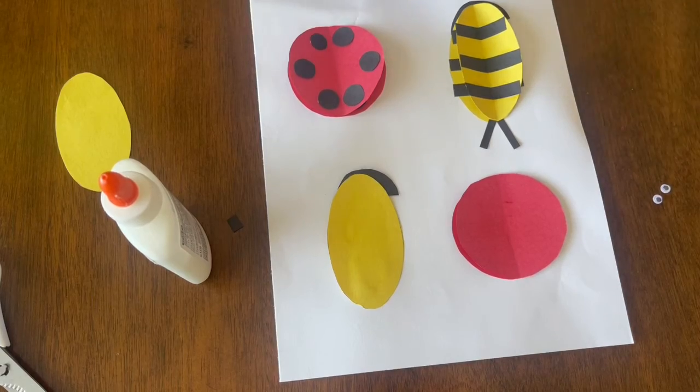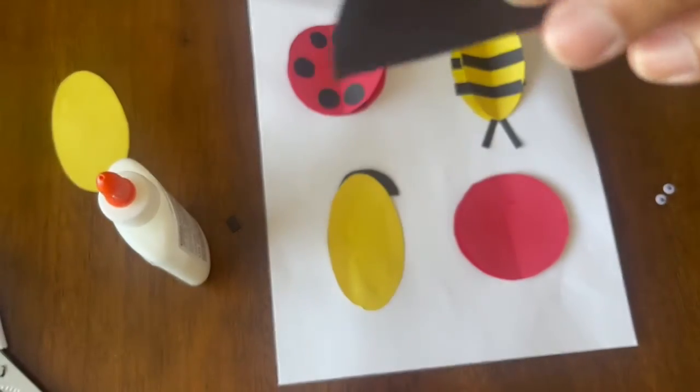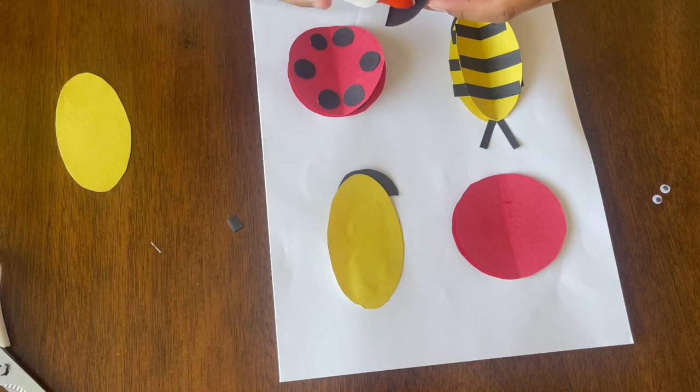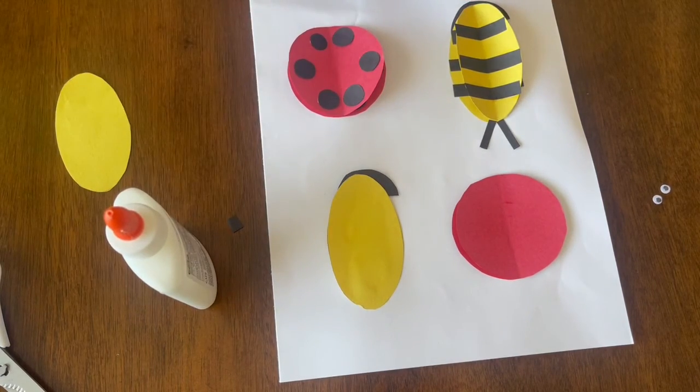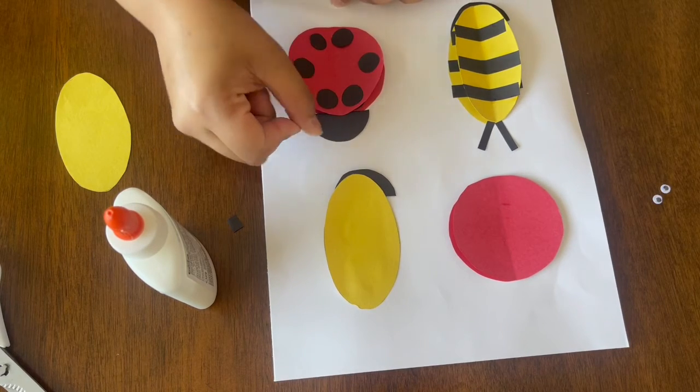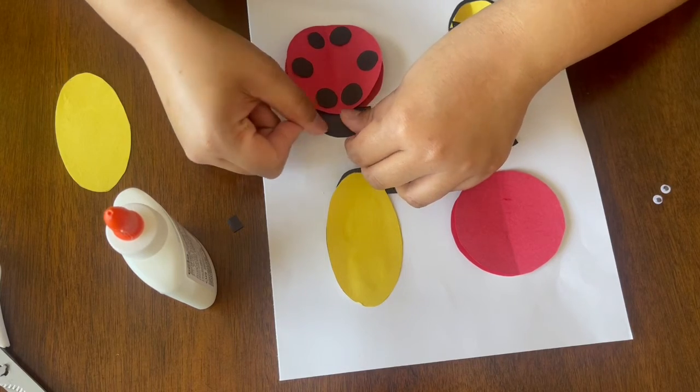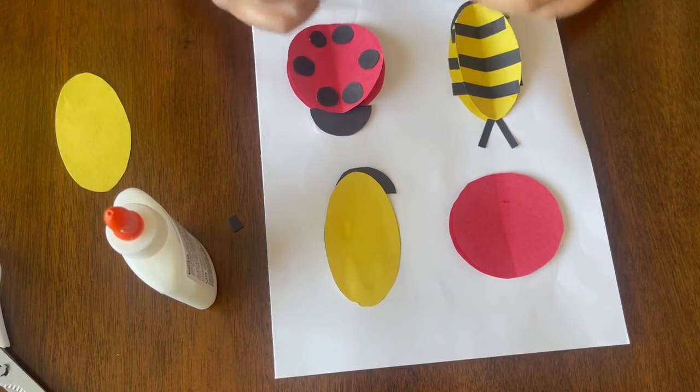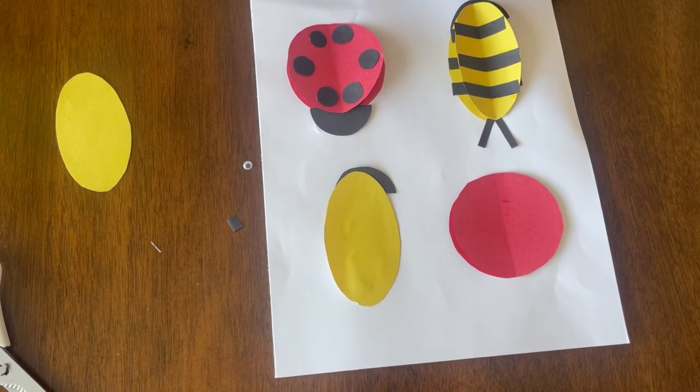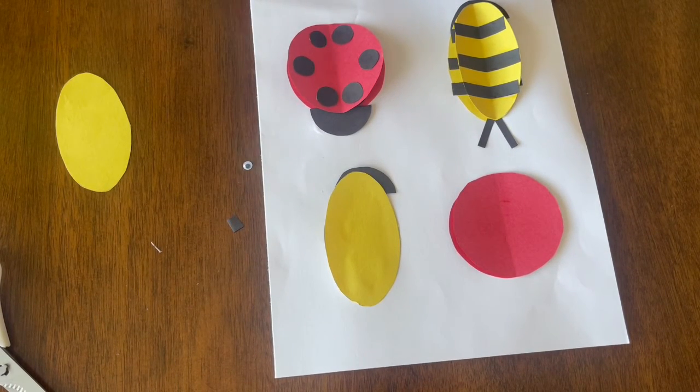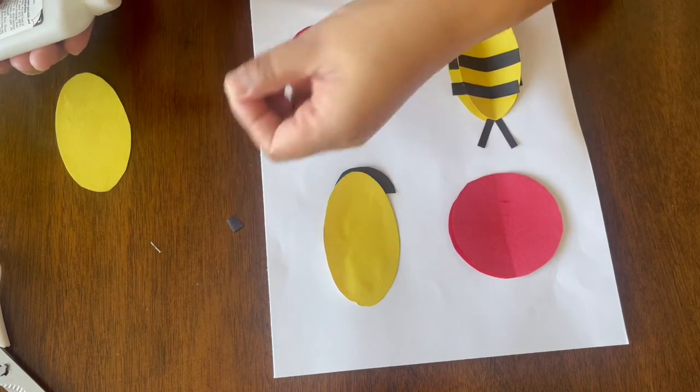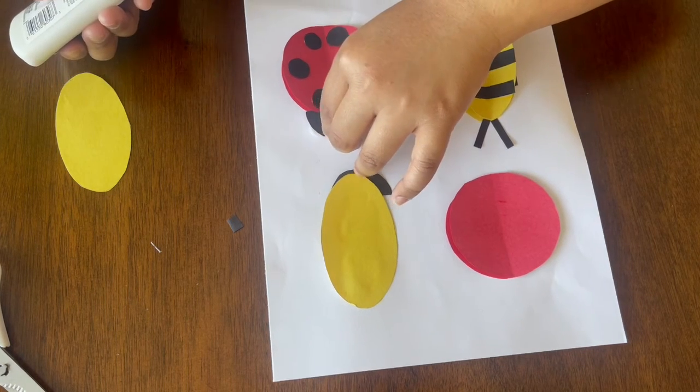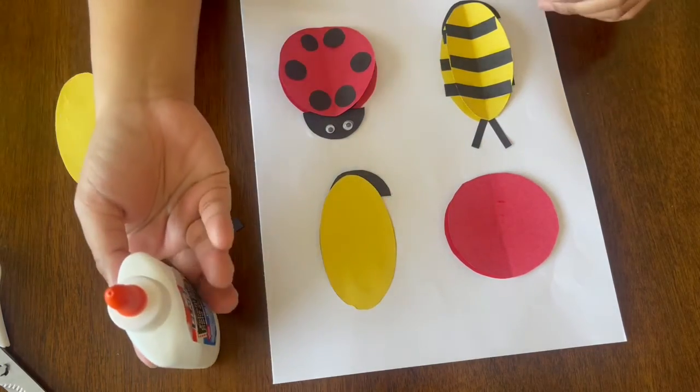Now we're going to go back to our lady bug. Go get your crescent shape cutout again. This will serve as your head or face of the bug. We're going to put glue and put it at the top. And then we're now going to get our googly eyes and of course, we're going to put it there. Basically, we're pretty much done.